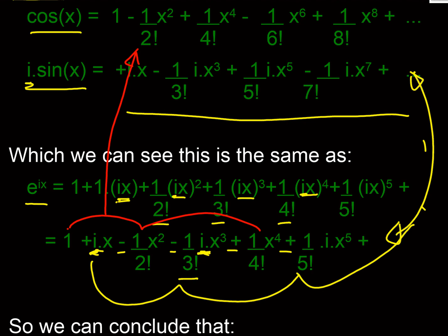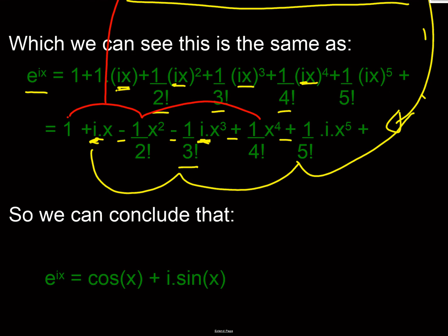So what we can see therefore is e to the ix is going to be our cos series plus i times our sine series. So what we've effectively proved is this identity, which is extremely useful in complex numbers, and we've done it using Maclaurin.